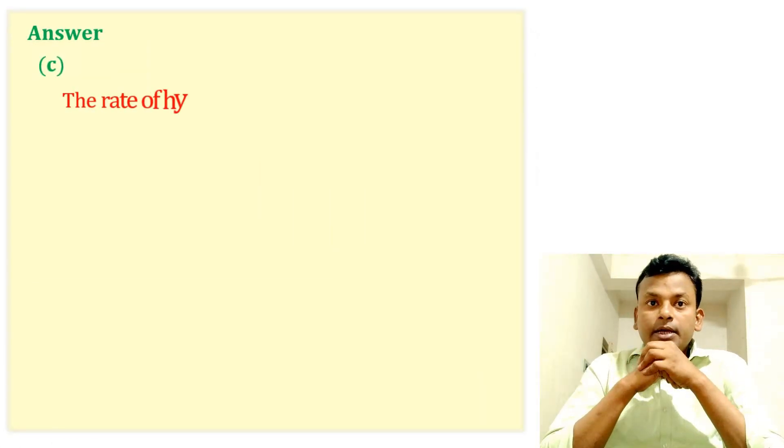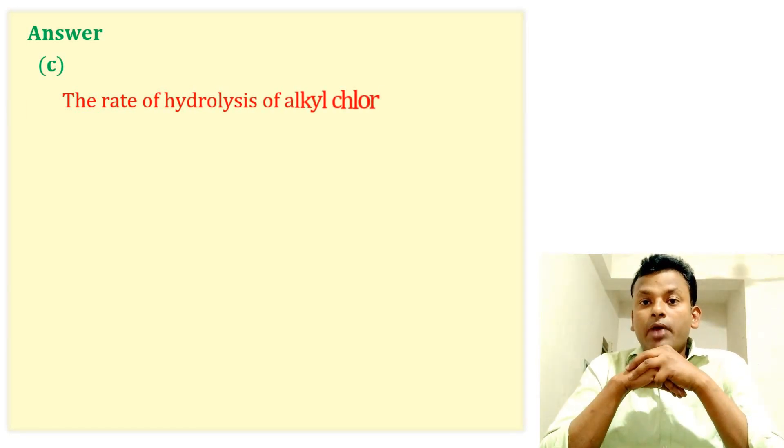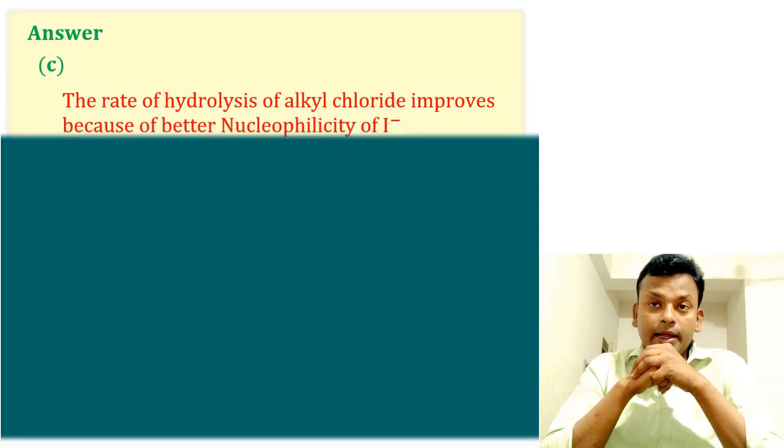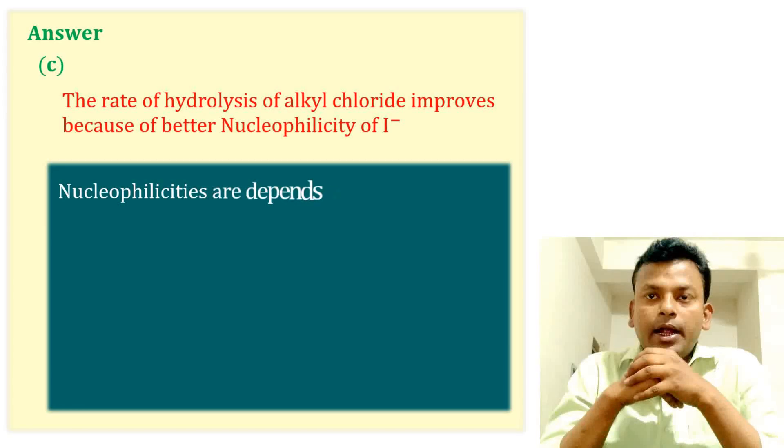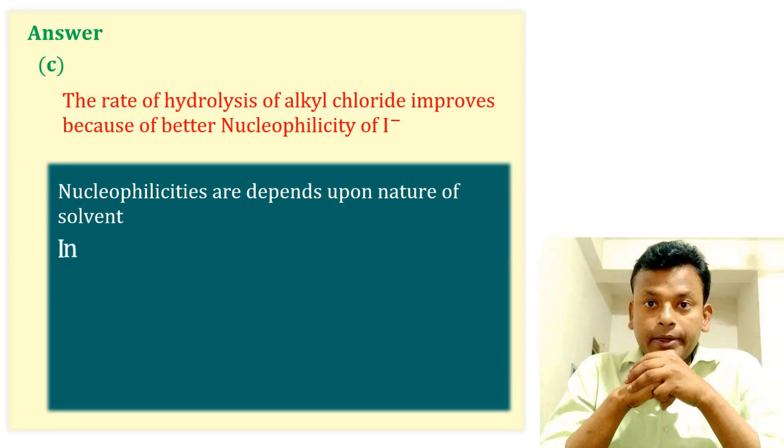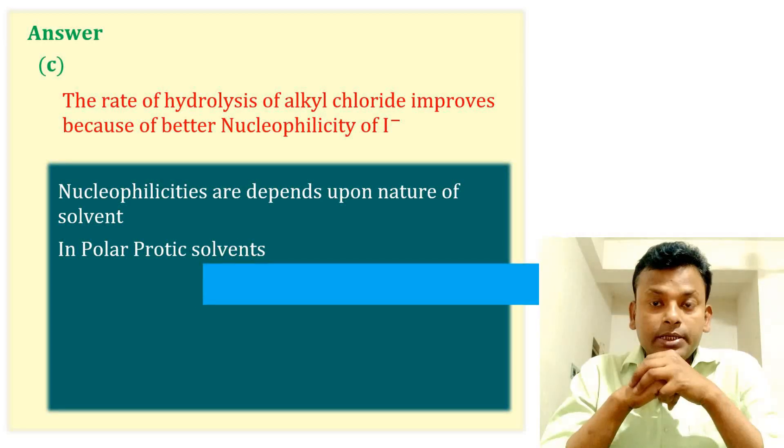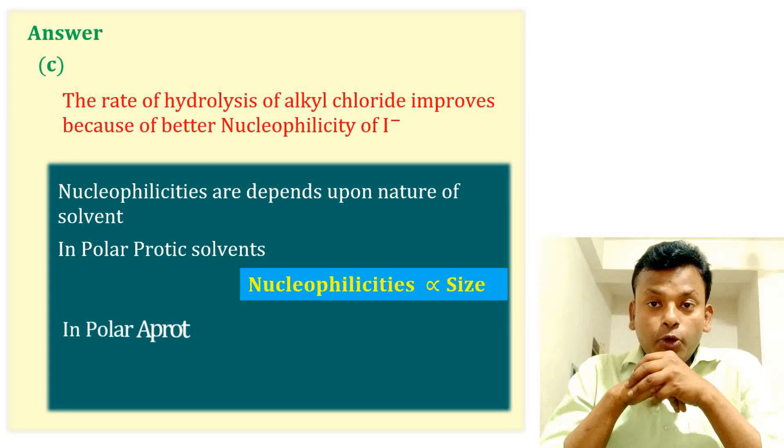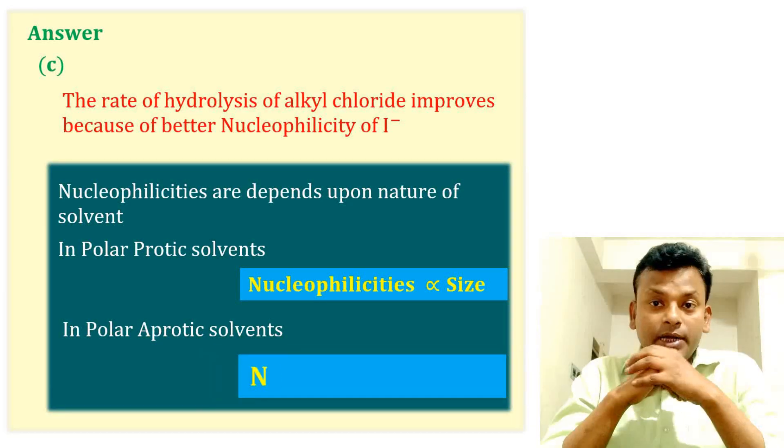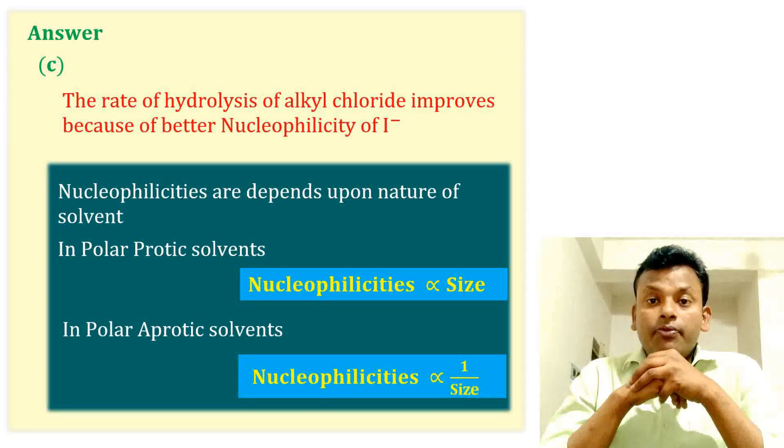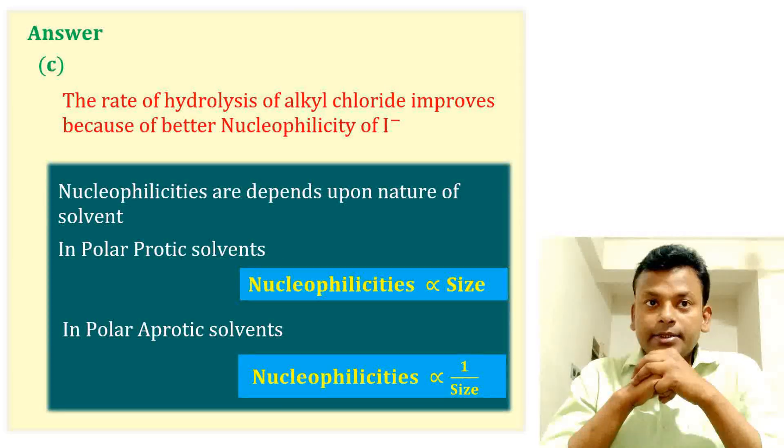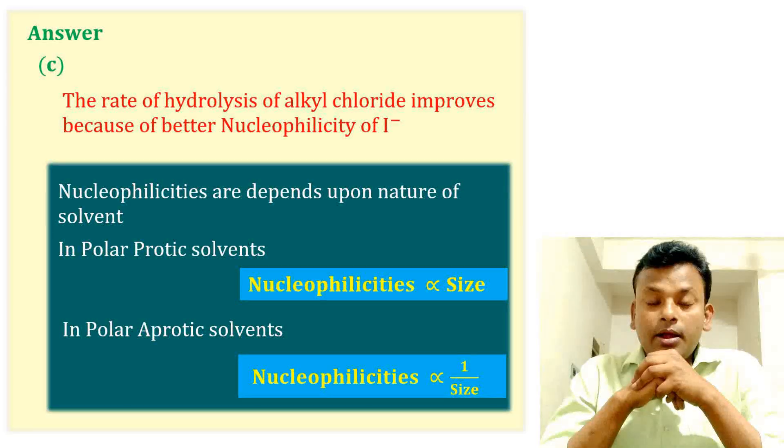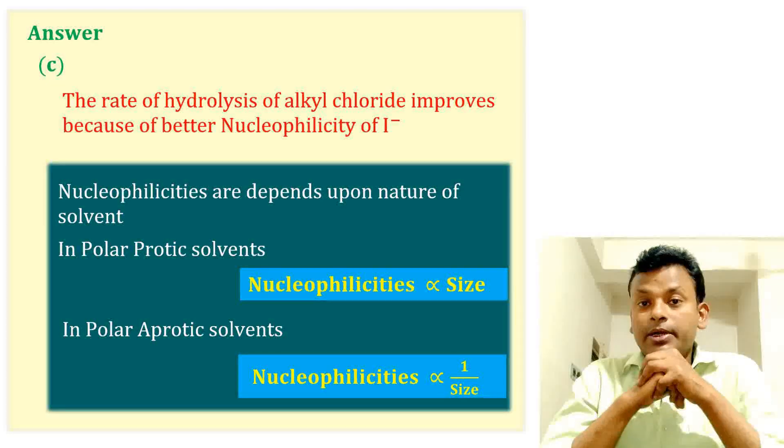The rate of hydrolysis of alkyl chloride improves because of better nucleophilicity of I negative. Nucleophilicity depends upon the nature of solvent. In polar protic solvent, nucleophilicity is directly proportional to size of ion, and in polar aprotic solvent, nucleophilicity is inversely proportional to size of ion. So option C is the correct answer, meaning both assertion and reason are true and reason is the correct explanation of A.